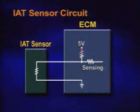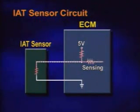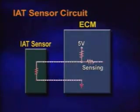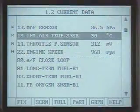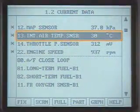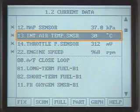The intake air temperature sensor signal is sent to the ECM for correction of the intake air amount. The intake air temperature sensor signal can be checked with current data.